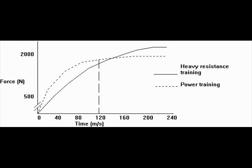Think back to part one — we talked about increasing neuromuscular strength. That adaptation by itself raises the whole curve. But think back to parts two and three: we talked about strength training slowing down the nervous system and lowering rate of force development. That slows the ascent of the curve. So the combination of those two effects produces this difference in the force curves.